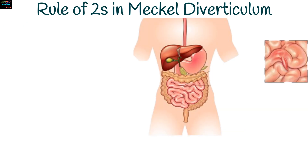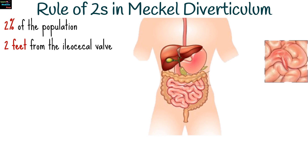The Rule of Two is a mnemonic used to remember the key characteristics of Meckel's diverticulum. It highlights the following points: Meckel's diverticulum is present in about 2% of the general population. It is typically located about 2 feet, approximately 60 cm, from the ileocecal valve, which is the junction between the small intestine and the cecum. The diverticulum is usually around 2 inches, or about 5 cm, long.